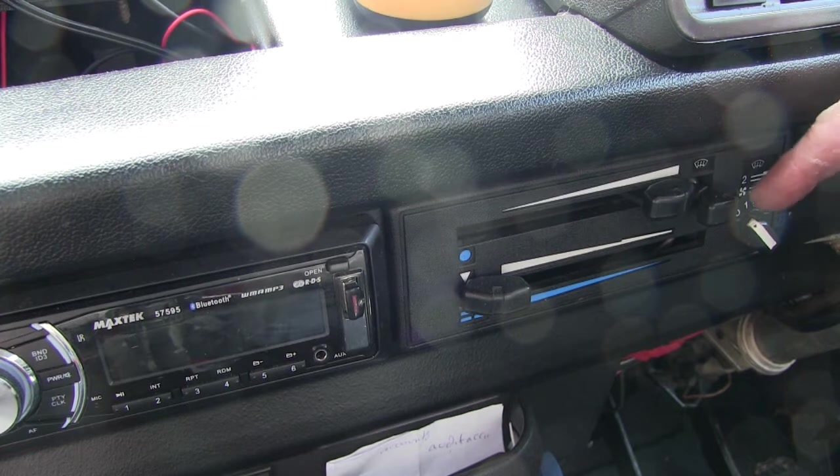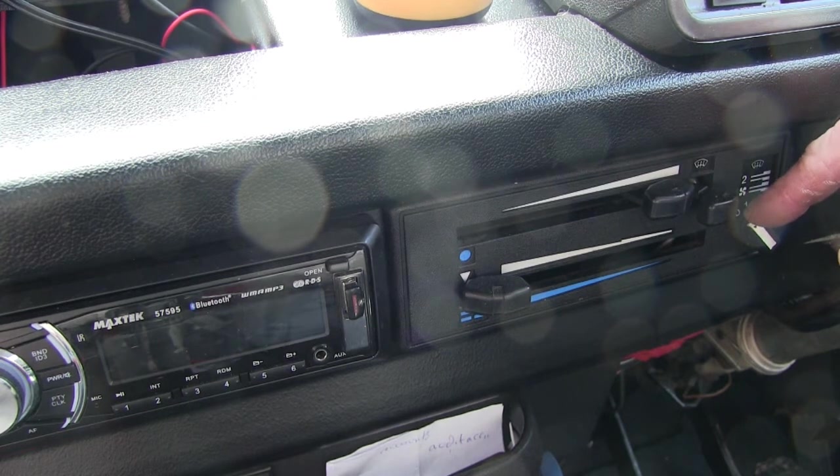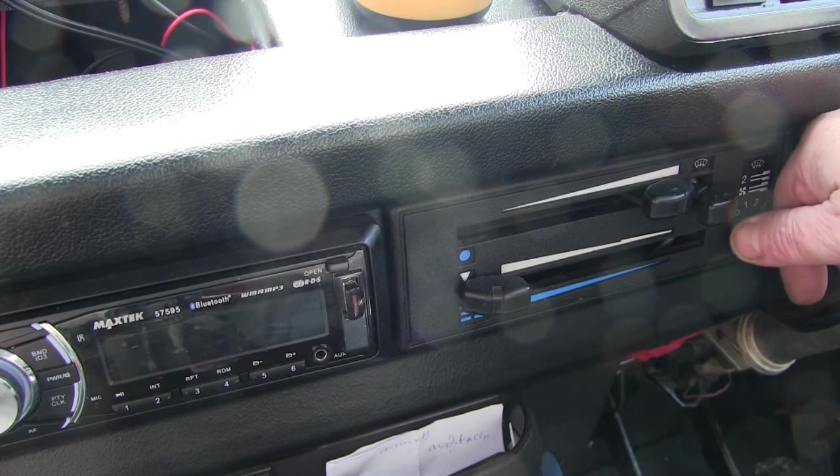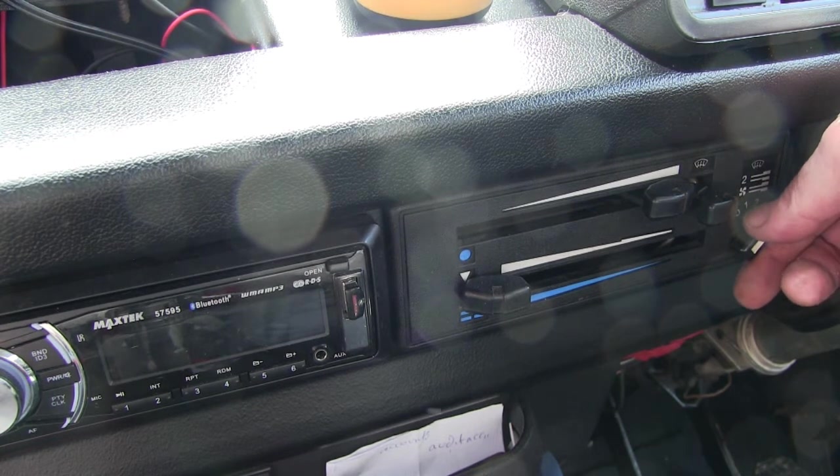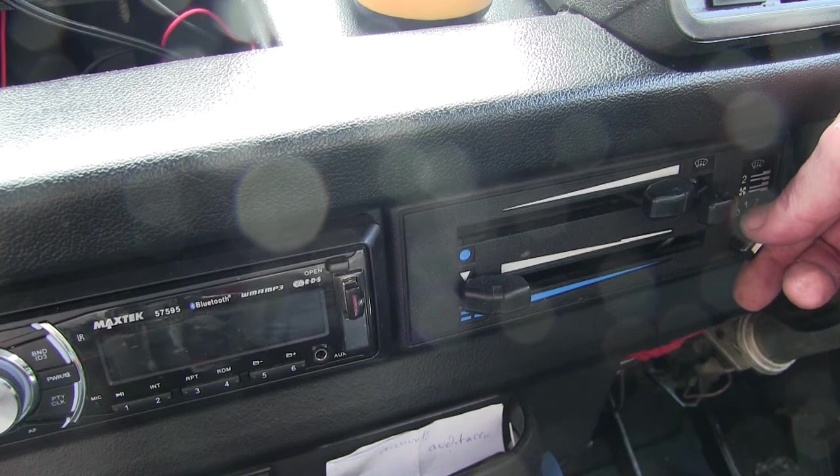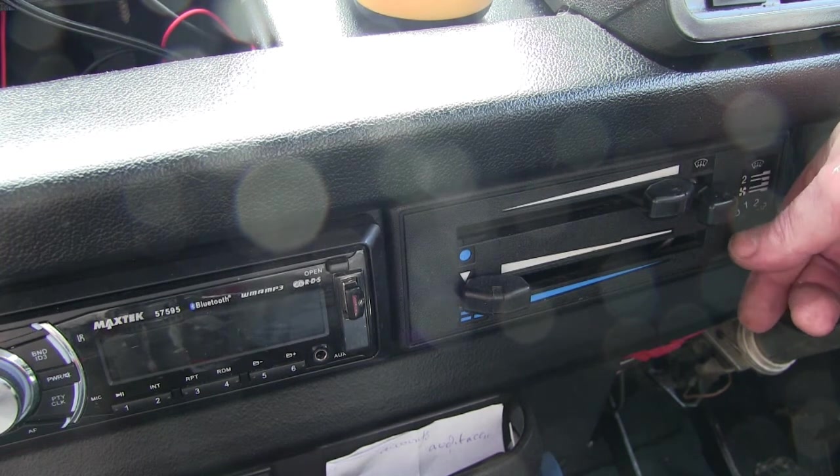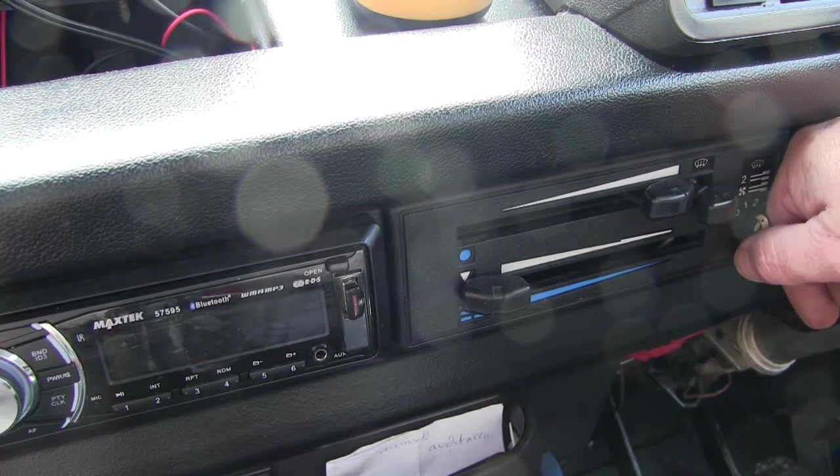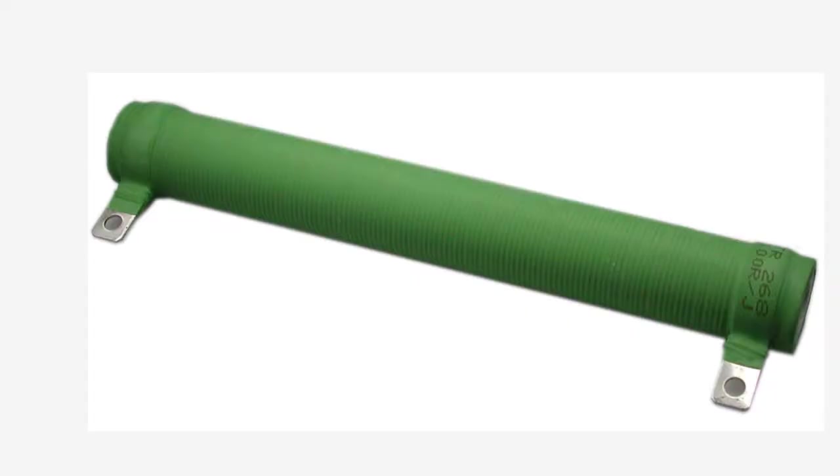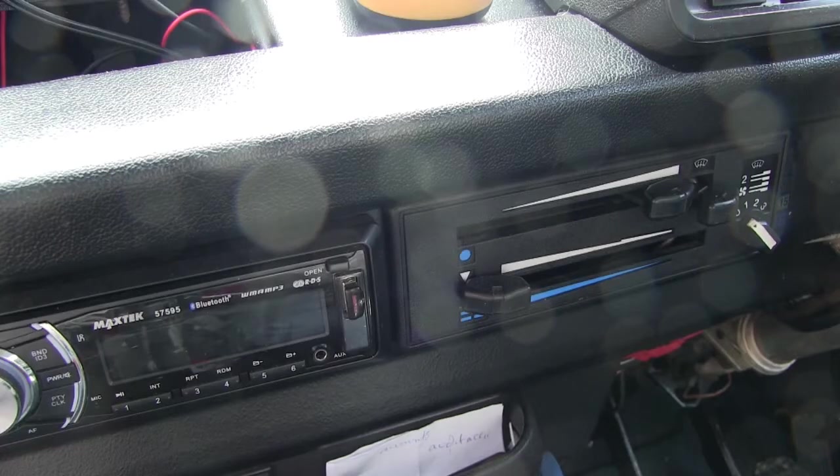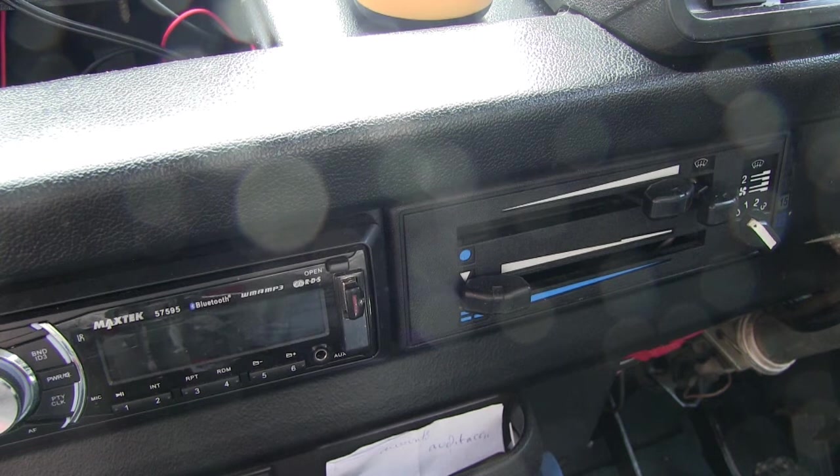Normally on a stock system with a stock blower, you've got a three position fan. When it's in position three, the motor is actually running flat out, it's getting full 12 volts. The only thing that dictates the other two speeds on one and two is there are two resistors put in the circuit and they reduce the power sufficiently to reduce the speed of the actual motor.